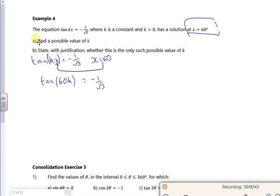So if I do the inverse tan of minus 1 over root 3, the 60k comes out as minus 30 degrees.